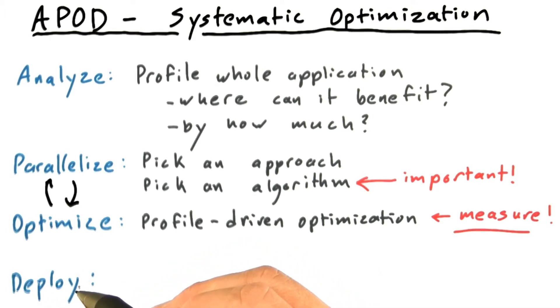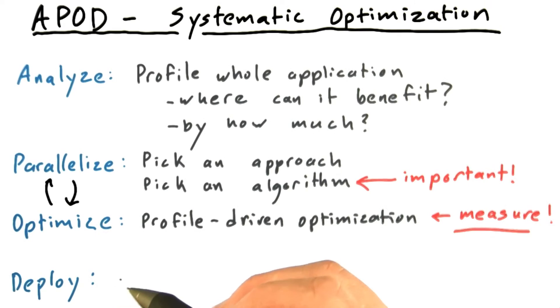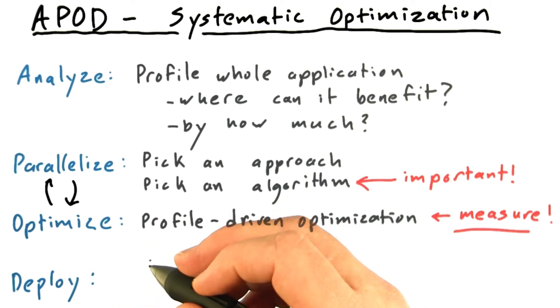Finally, the deploy step. In this class we do these little homeworks that are fairly self-contained so you can get them done in a reasonable amount of time. The process of actually deploying a GPU-accelerated code into real use is not going to come up a lot in this class. Consider this just free software engineering advice.